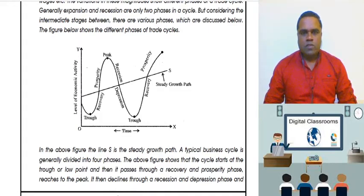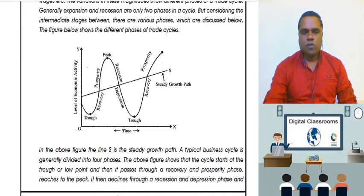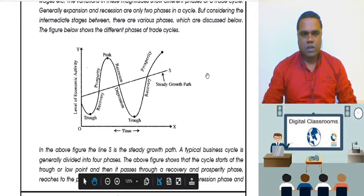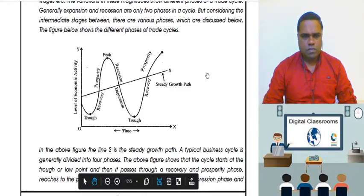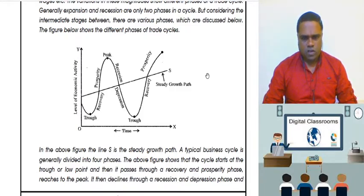Here we were discussing about the different types of trade cycles — we were calling them the phases of trade cycles. Phases are basically the different stages that we have. As you can see in the diagram itself, we had discussed two stages earlier, and after discussing those stages, we will continue with two other stages as well.